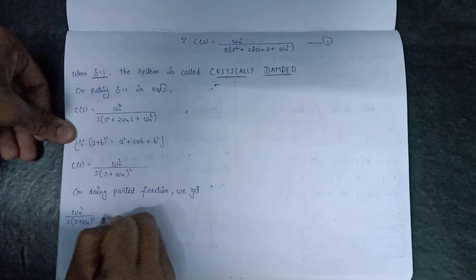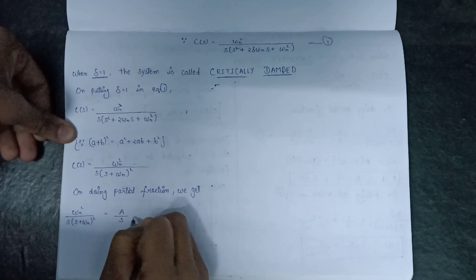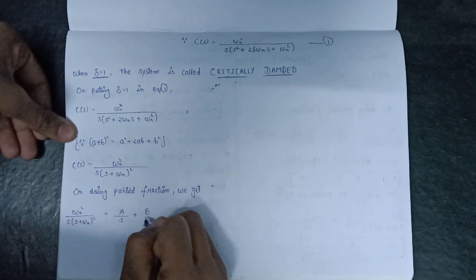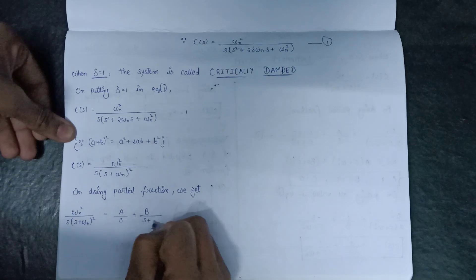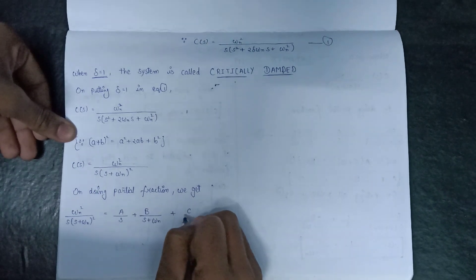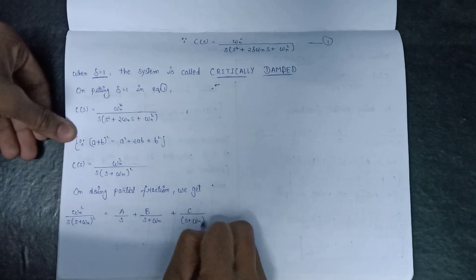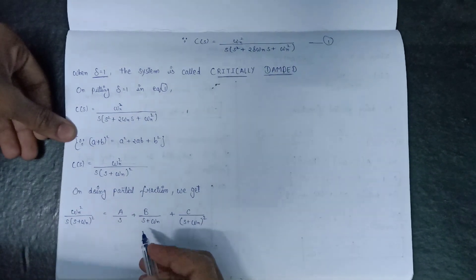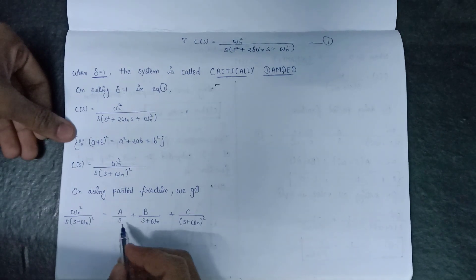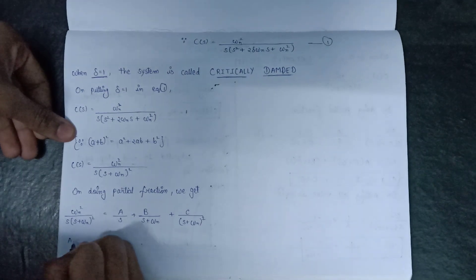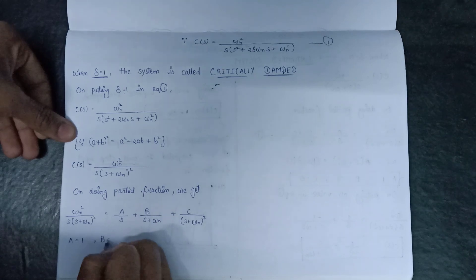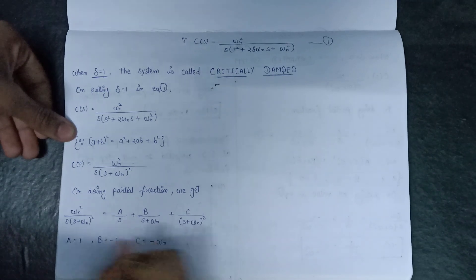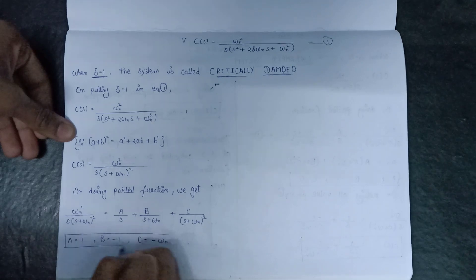After breaking into partial fractions, C(s) = A/s + B/(s + ω_n) + C/(s + ω_n)². On evaluating and putting in the values, we get A = 1, B = −1, and C = −ω_n. These are the values we get after solving the above expression.